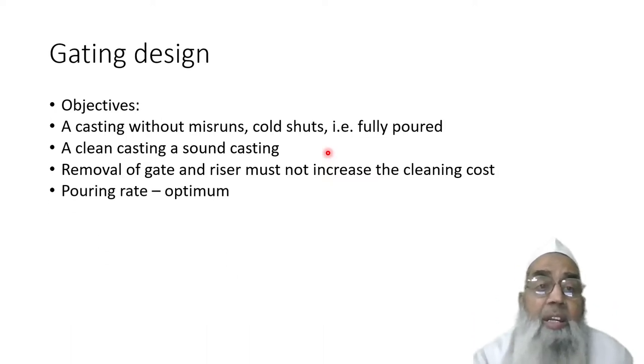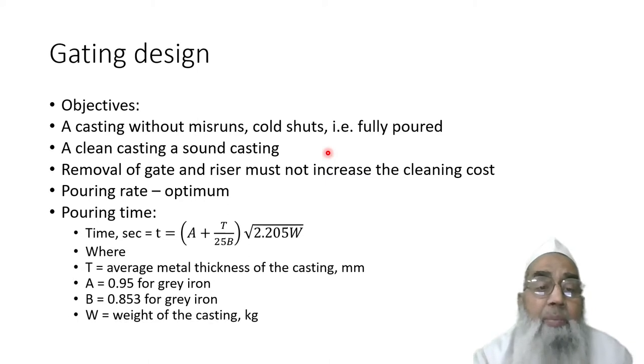Pouring rate should be optimal. Pouring time can be calculated by the formula where T is the average metal thickness of the casting, A is 0.95 for grey iron, B is 0.853 for grey cast iron, and W is the weight of the casting. From this formula, we can calculate the filling time and pouring time.